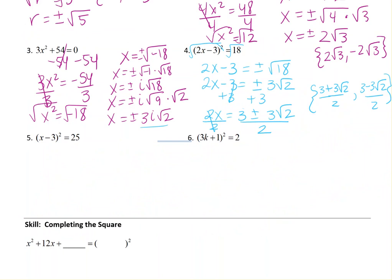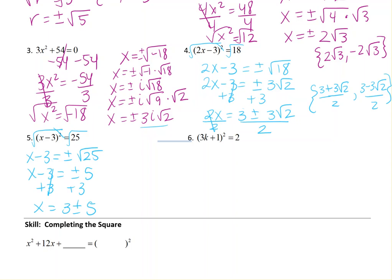For problem 5, we have x minus 3 squared, so taking the square root cancels the square and gives x minus 3 equals plus or minus square root of 25. Since 25 is a perfect square, this becomes x minus 3 equals plus or minus 5. Adding 3 to both sides: x equals 3 plus or minus 5. Don't stop here — this is actually solvable. 3 plus 5 gives 8, and 3 minus 5 gives negative 2. So the solution set is {negative 2, 8}. Make sure if you break all the way down to numbers that you finish solving.